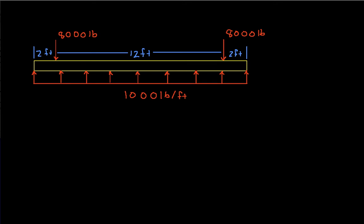To begin with, we note that with this distributed force we can define a weight function w(x), where x starts at 0 and goes to 16 feet. w(x) will be minus 1,000 pounds per foot. The distributed part of the load is represented by this weight function, which is positive downwards — that's why we have the minus 1,000 pounds per foot.